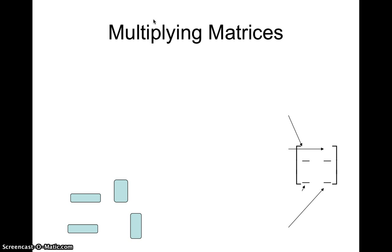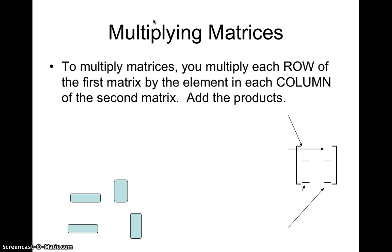So to multiply matrices, here's what you got to do. You got to multiply each row in the first matrix that you see in the problem by the elements in each column of the second matrix you see in the problem. Then you add those products. So here's an example. I'm going to break it down slowly because right now some of you might be thinking I'm speaking a foreign language.